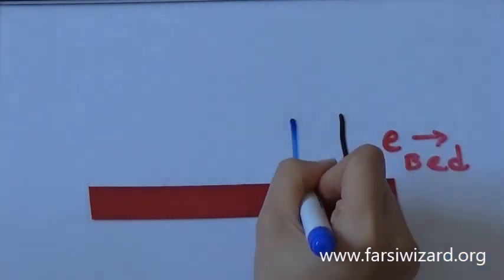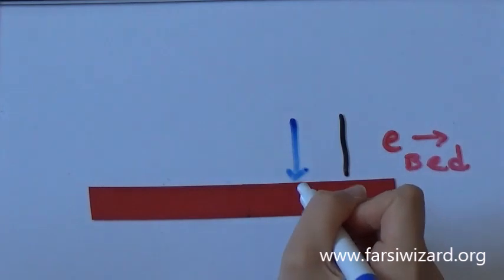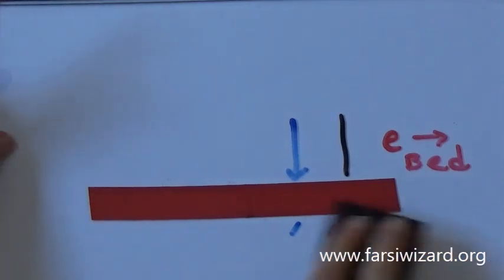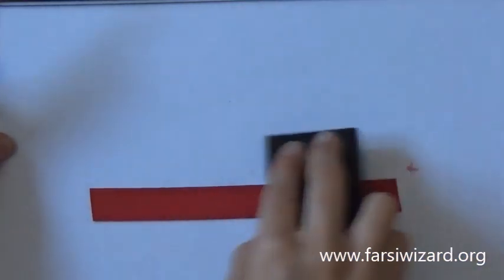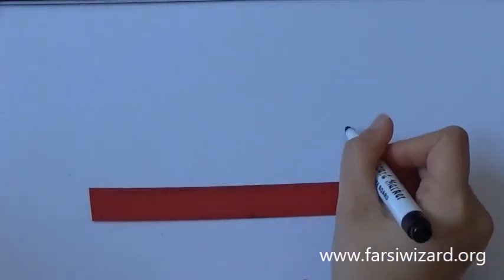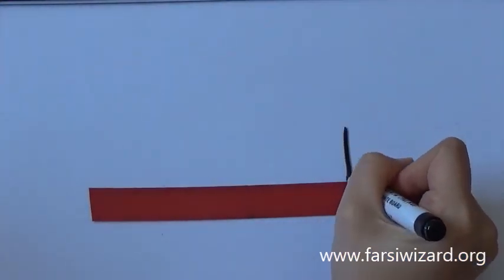Now again, the vertical line and the marker below. Remember these markers are not written. We're just using them here for you to understand why one version of Aleph is pronounced differently from another version of Aleph.